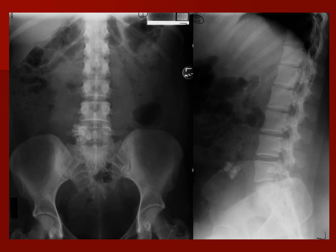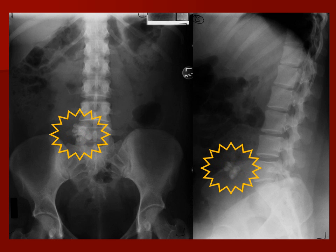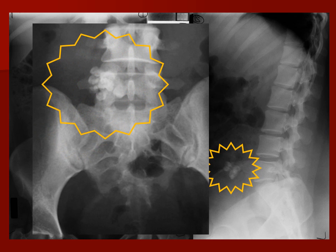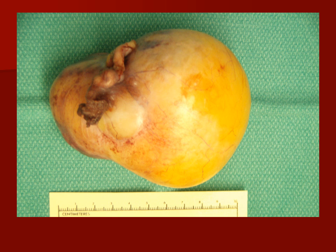In a different patient, looking at plain films of the abdomen, we can see a cluster of calcifications. If we magnify this, we can see that these are actually well-formed teeth. Teeth are actually ectoderm and not mesoderm, and they are extremely common in well-differentiated ovarian teratomas.